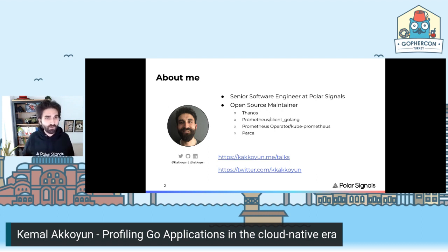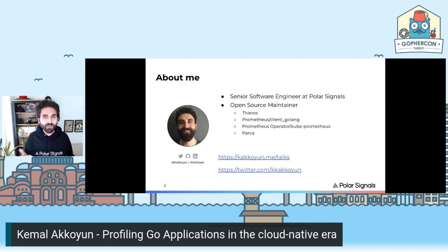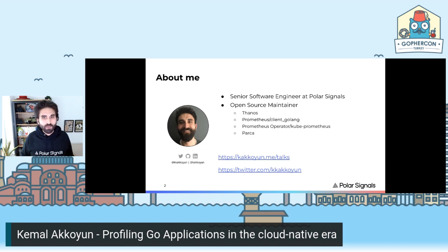I'm a maintainer of the Thanos project — maybe you know about it. It's a metrics collection tool, an extension to Prometheus to store long-time retention metrics. I also recently became a Prometheus client Golang maintainer. Today we're going to talk about continuous profiling. We are building another open source tool called Parca, and I'm also a maintainer of that. You can find all the slides after the talk under the links I'll share.